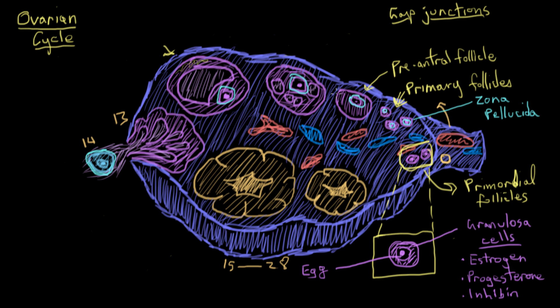And remember, the granulosa cells are shaded in purple here. So while the granulosa cells are proliferating, this wall on the outside of the follicle, called the theca, starts to form.